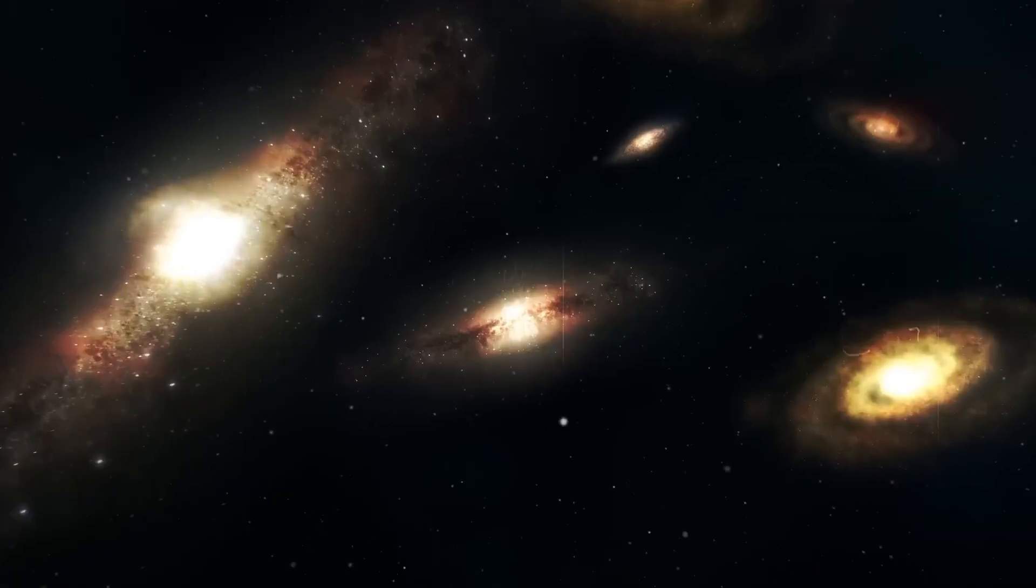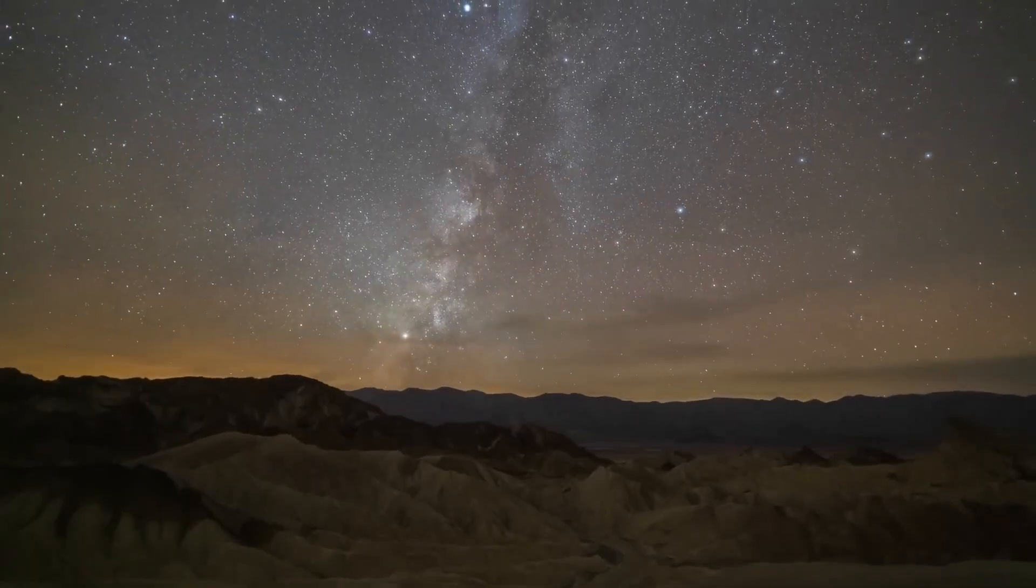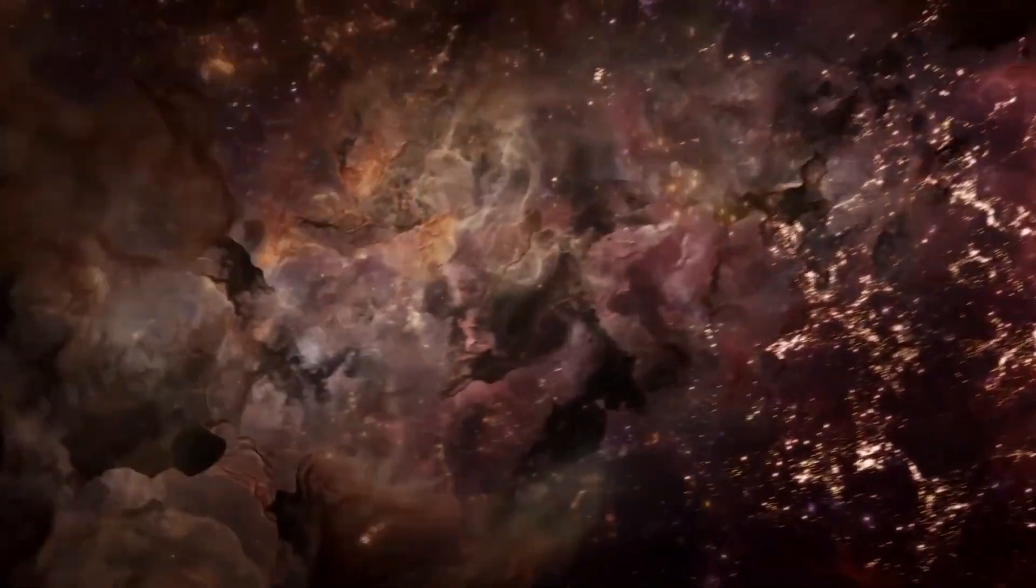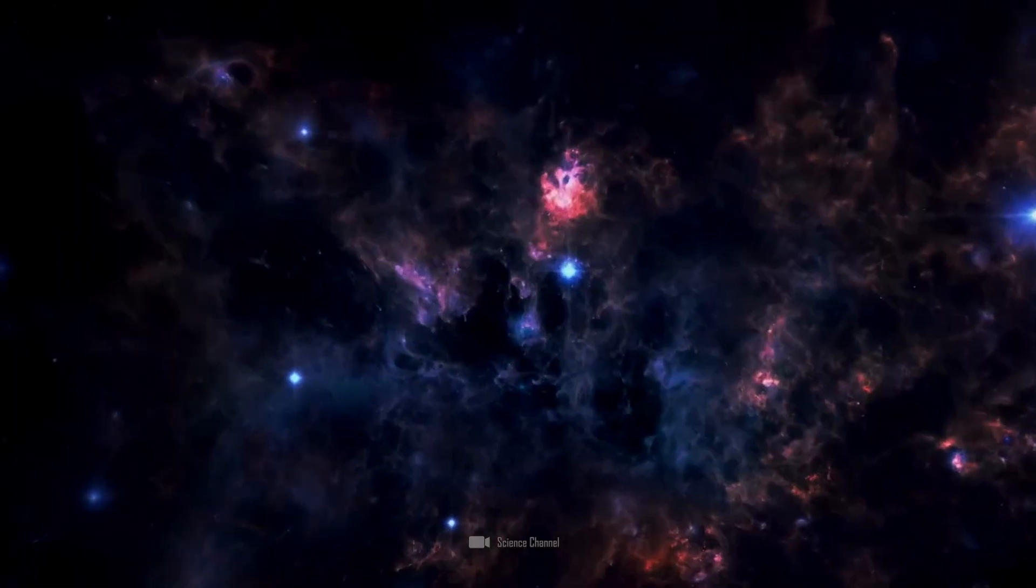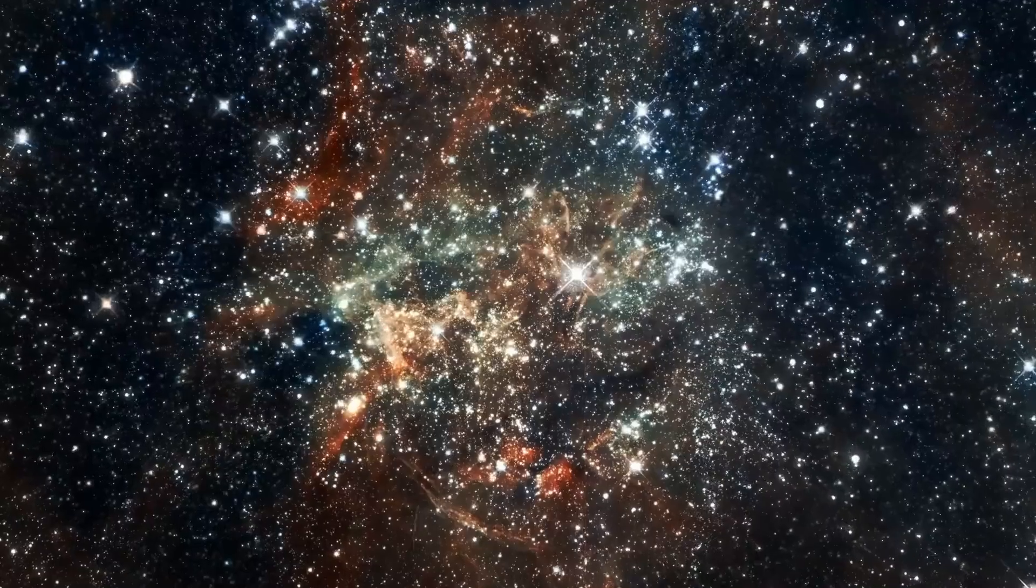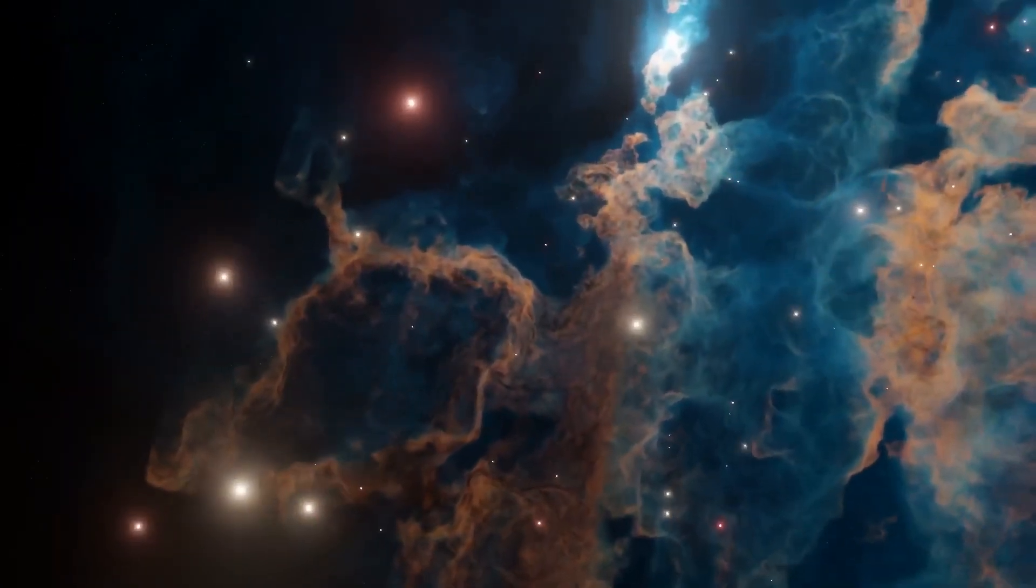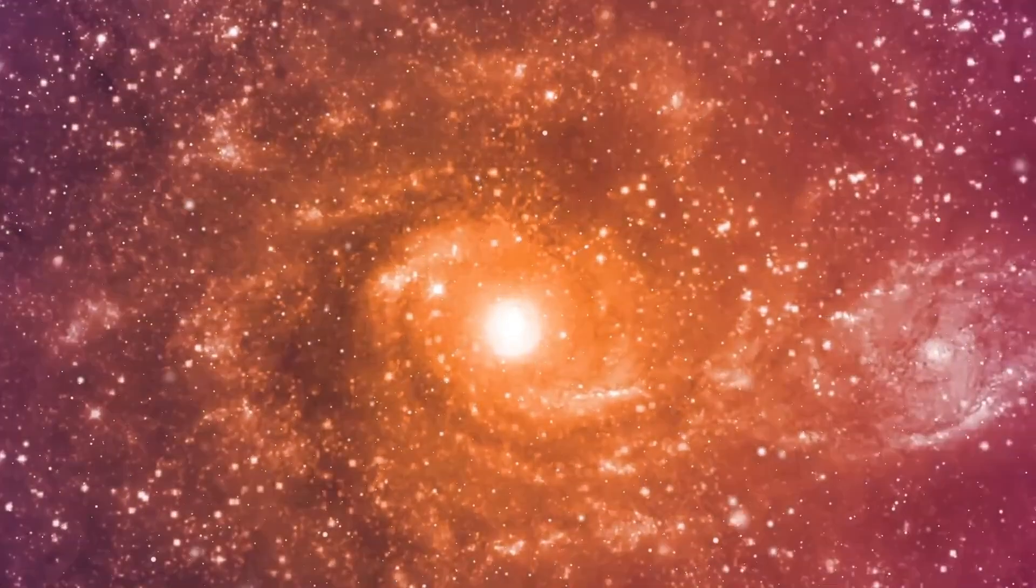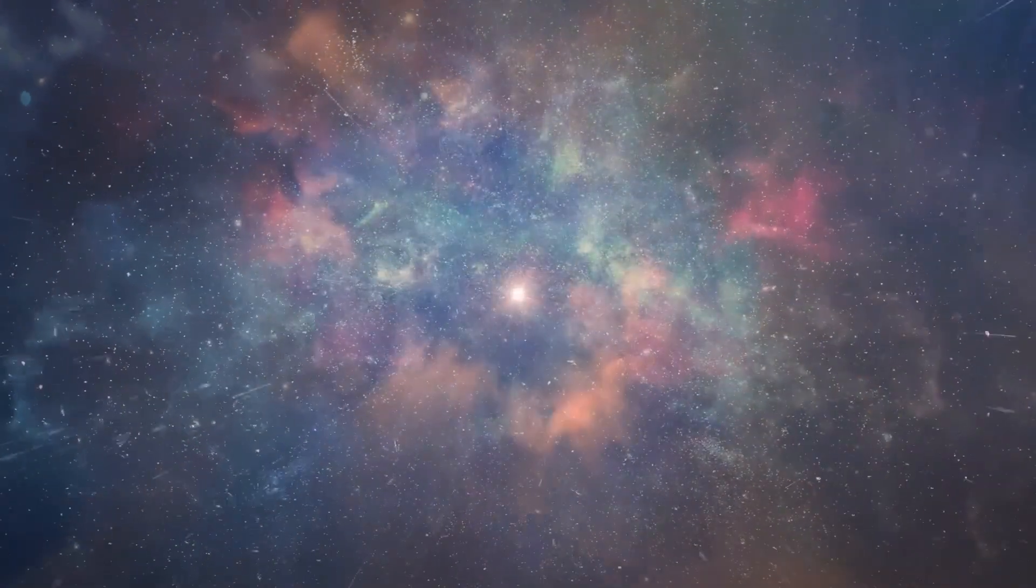And again, instead of a faint baby galaxy as predicted by current models, the researchers found a structure containing several hundred million solar masses of stars. Once again, the question arises: how could such a bright and massive galaxy have formed in less than 300 million years? Furthermore, why did further analysis reveal that this galaxy's spectrum contains oxygen and hydrogen emission lines? These facts indicate that several generations of massive stars had already lived and died by the time experts observe this galaxy.